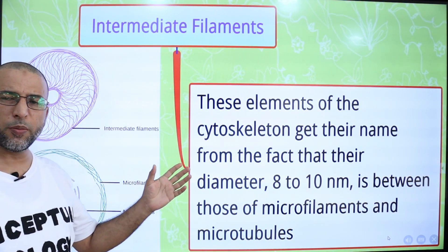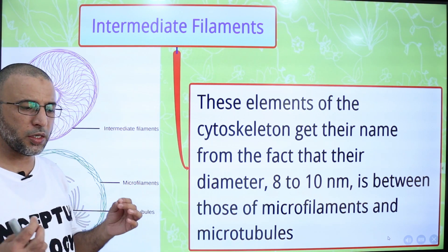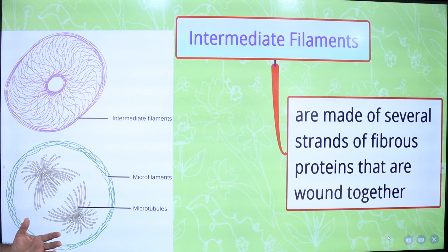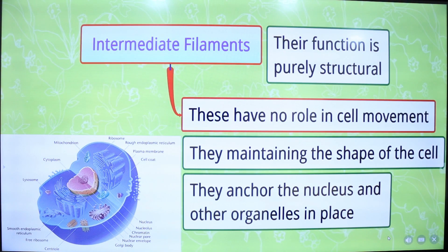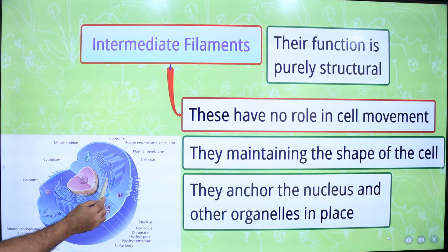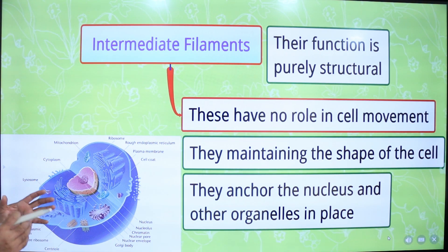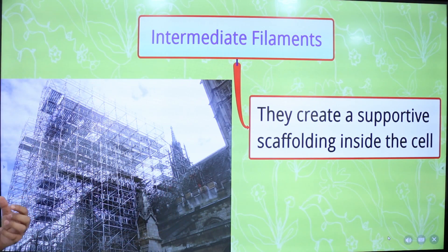The second type of cytoskeleton is known as intermediate filaments. These elements of the cytoskeleton get their name from the fact that their diameter is 8 to 10 nanometers, which is between those of microfilaments and microtubules. Intermediate filaments are made up of several strands of fibrous protein that are wound together. They have no role in cell movement, but their function is purely structural — they are responsible for maintaining the shape of the cell. They anchor the nucleus and other organelles in place, so in a cell, the endoplasmic reticulum, nucleus, mitochondria, Golgi bodies, centrioles, and lysosomes are all placed in their proper position with the help of intermediate filaments. They create a supporting scaffolding inside the cell.